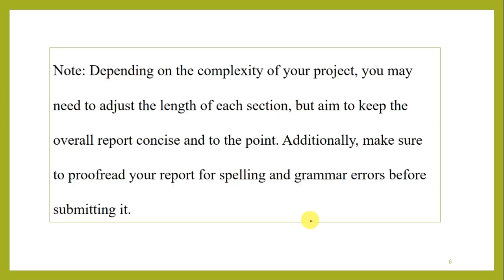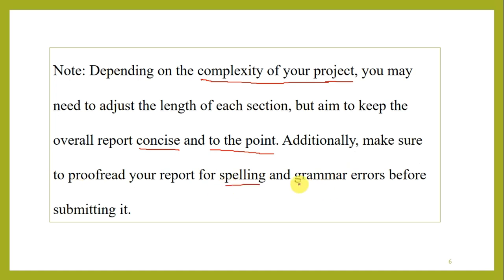This is a general idea. Depending on the complexity of your project — whether you are doing chemistry, physics, mathematics, or computer-related (PPS) — adjustments have to be made based on the type of project. Our aim is to keep the overall report concise and to the point, and to make your report in two to three pages for this time and submit on time. Additionally, make sure to proofread your reports for spelling and grammar errors.